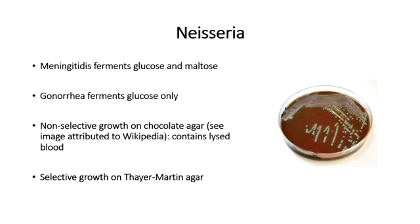Their growth can be quite specific in that they require enriched growth media in order to be cultured. For example, chocolate agar is a non-selective growth media that contains blood agar in which red blood cells have been lysed by heating them to about 80 degrees. This is useful for growing respiratory bacteria that have certain growth requirements not fulfilled by other agar media, so chocolate agar is a non-selective media for culturing organisms such as Neisseria meningitidis.